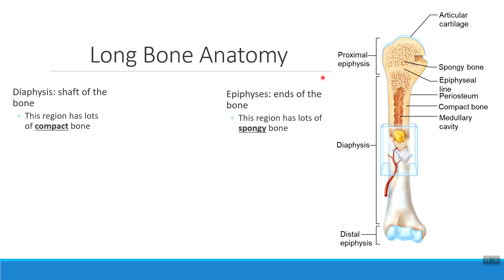As a quick reminder about the words proximal and distal: anytime we're talking about something that's on a limb — an arm or a leg — we're always going to use this terminology to describe parts of it. The proximal epiphysis is the part closest to the shoulder, or in other cases, the hip joint. The distal epiphysis is what's farther away from the shoulder or from the hip joint.